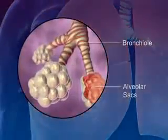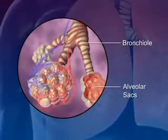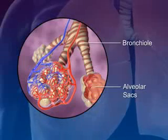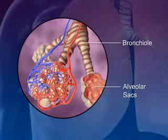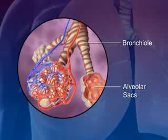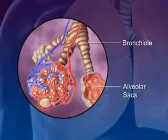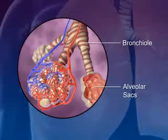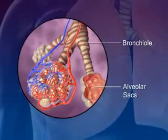At the end of each bronchiole are the alveolar sacs. The alveolar sacs are surrounded by blood capillaries and contain millions of single-layer alveoli cells where the gas exchange takes place.